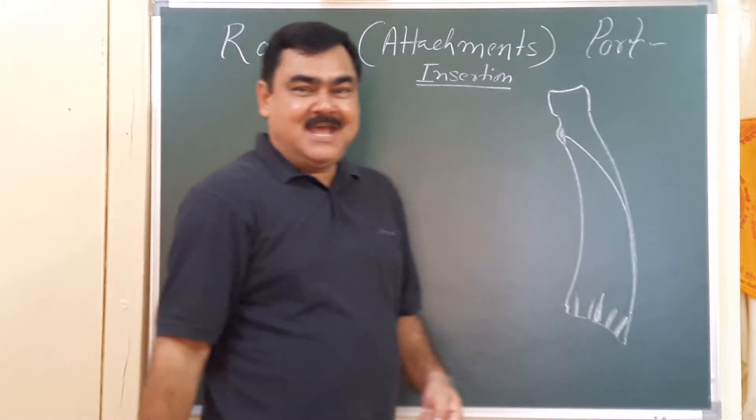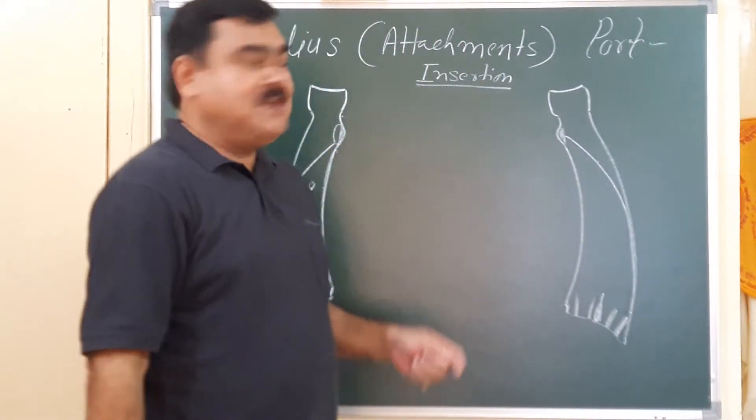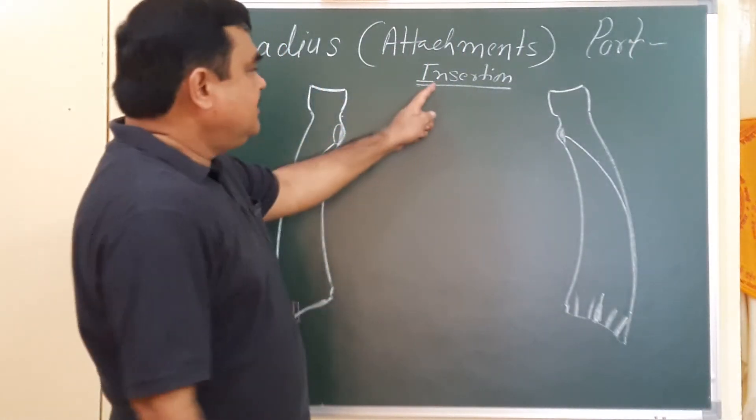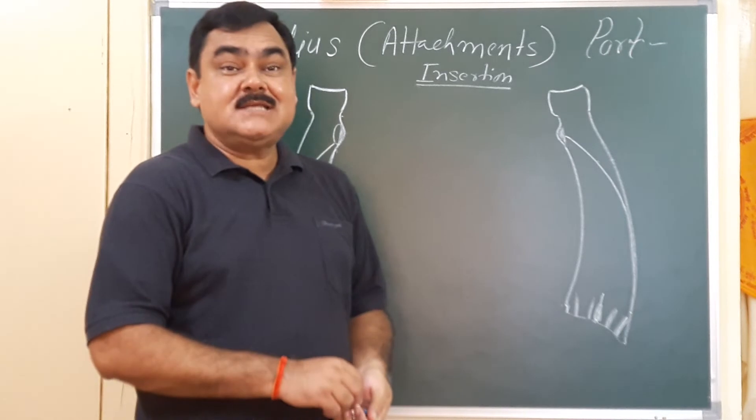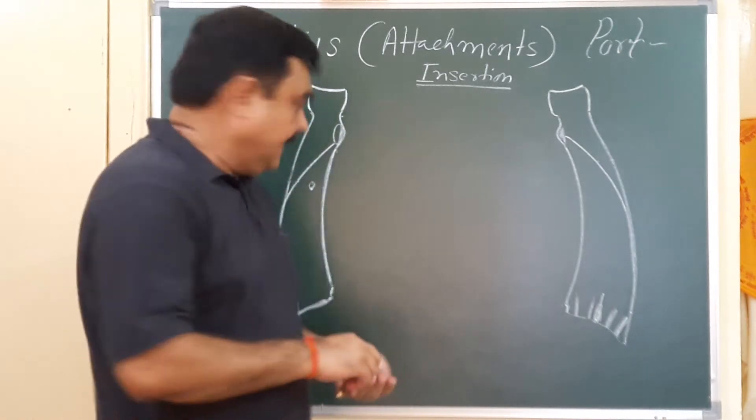Now let's discuss the attachments on the radius. First, we will discuss the insertion of the muscles.